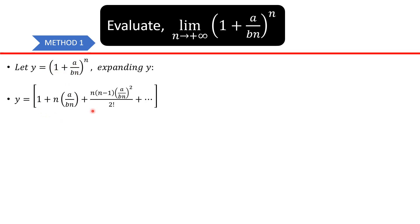This is the formula with our respective values substituted in for a and b. Since a is 1 here, we can basically ignore it in the expression unless necessary. So we have: 1 plus n times b raised to the power 1, where b is a over bn.